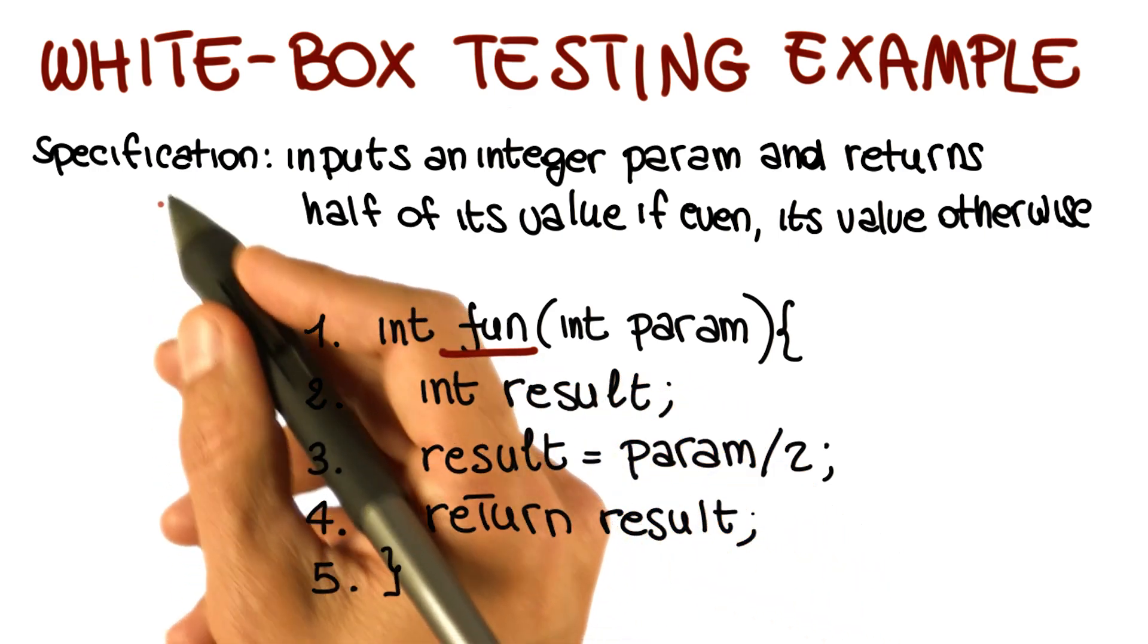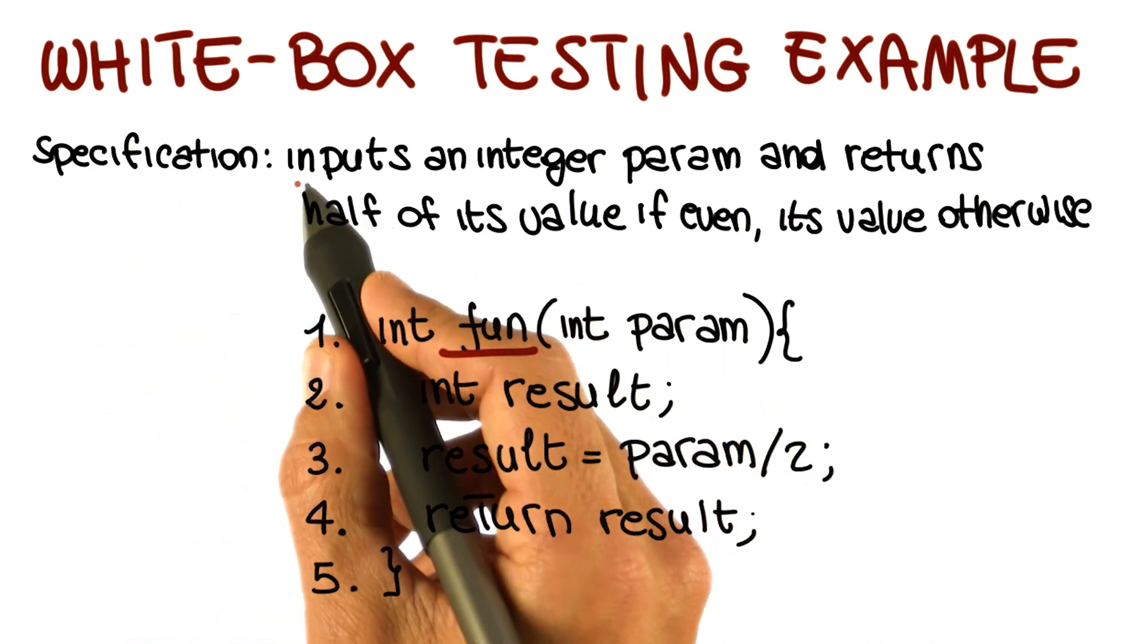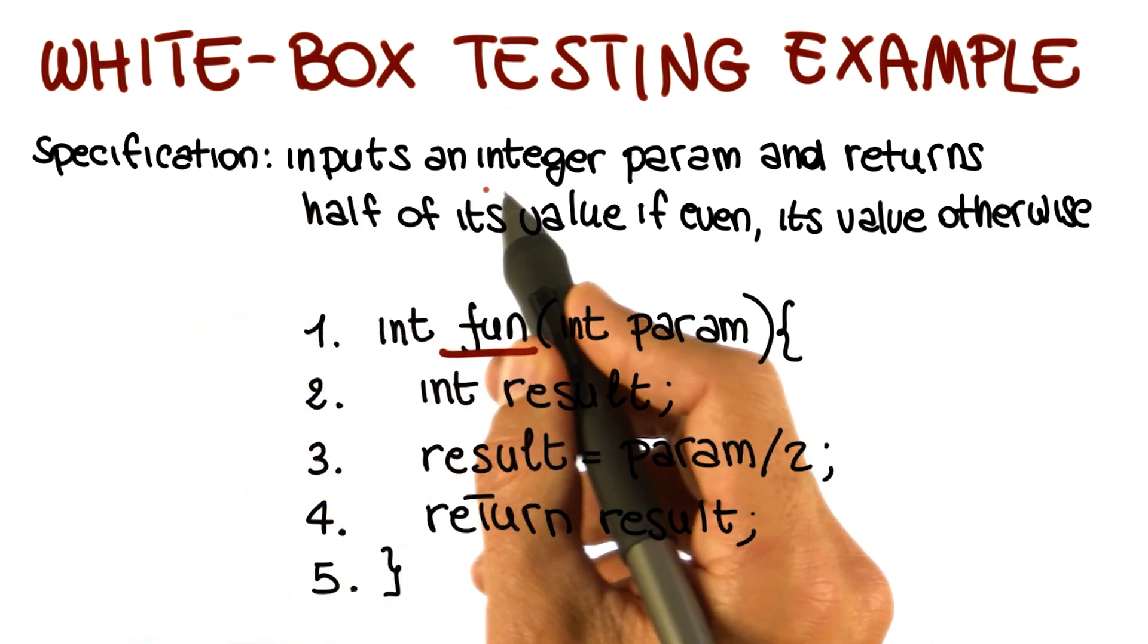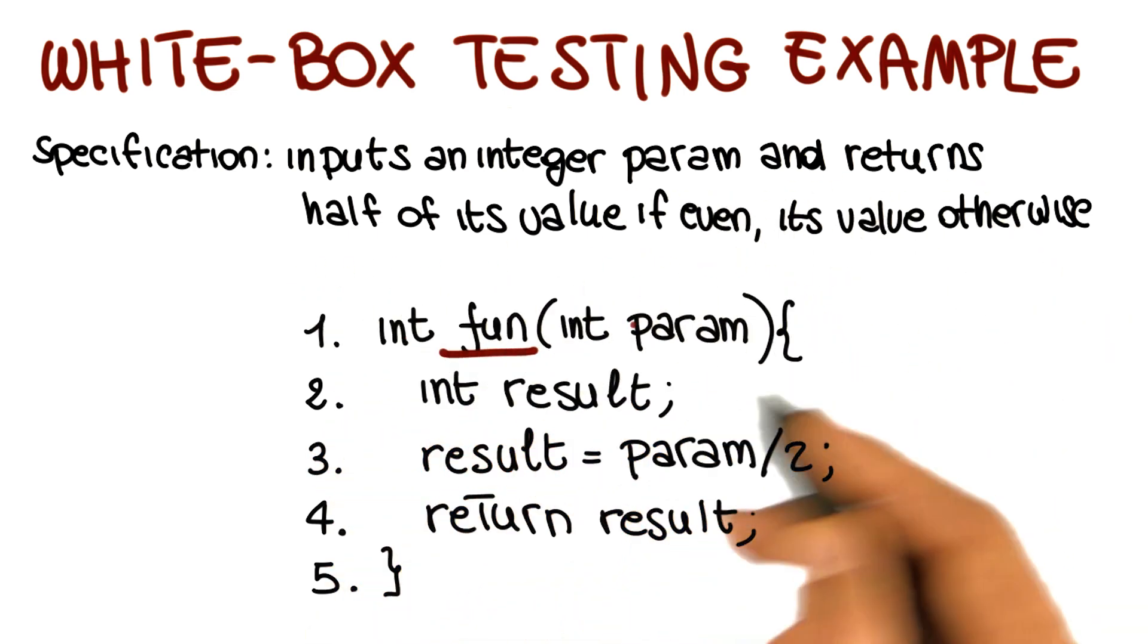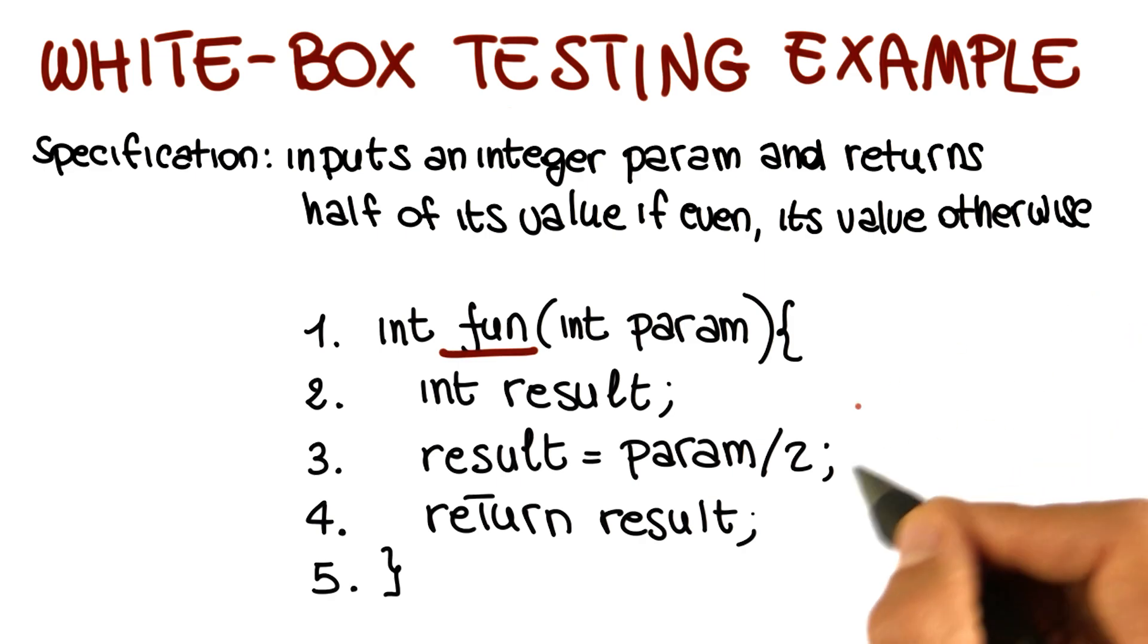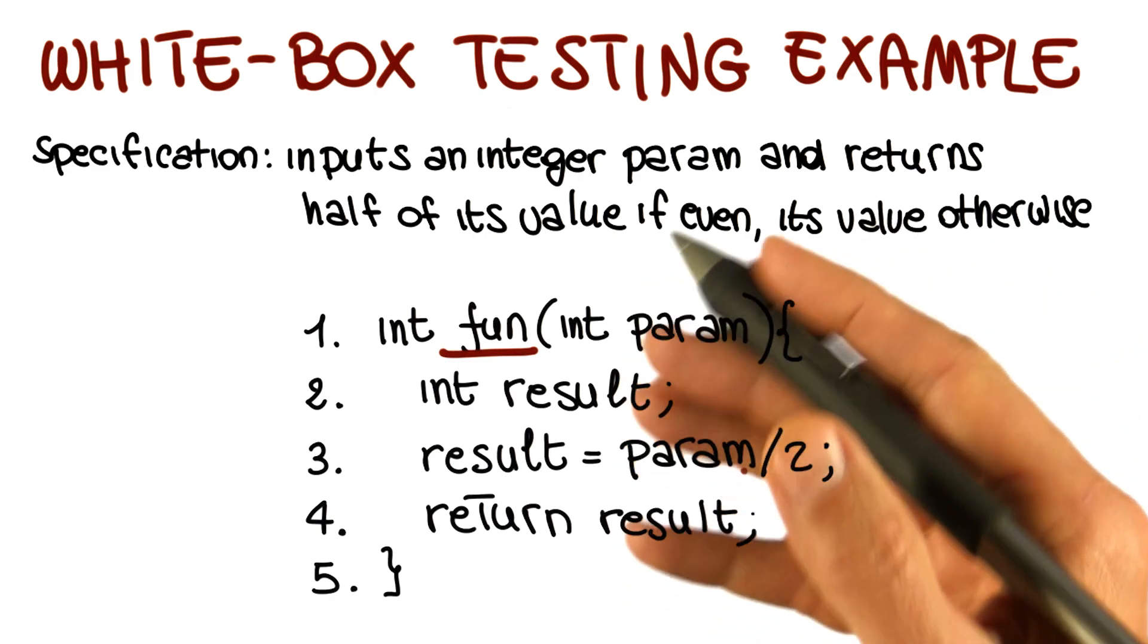Imagine that I now give you a specification for this function. And what the specification says is that this function inputs an integer parameter, param, and returns half of its value if param is even and its value unchanged otherwise. That means if param is odd.